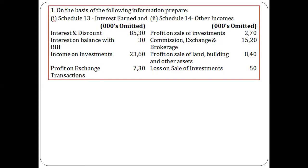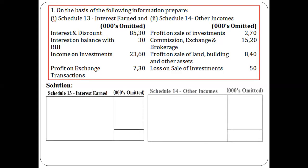Schedule 13 pertains to income — specifically interest earned. That is the core banking activity. Schedule 14 is concerned with other incomes, which are secondary banking activities such as agency services. The first item in Schedule 13 is interest and discount, meaning the bank has received interest and also earned income through discounting bills of exchange. For discounting bills, the banker charges a commission, which is a Schedule 13 item.